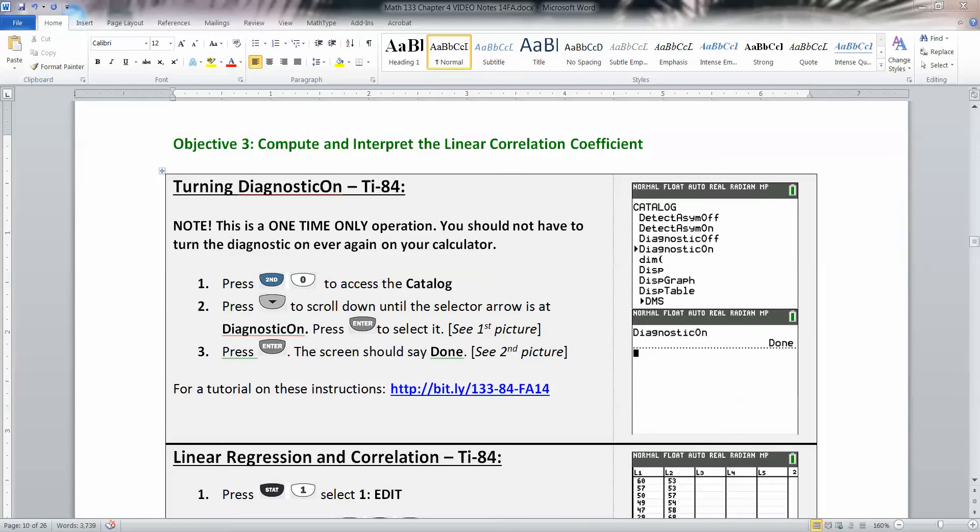Now that we know how important the correlation coefficient is, it's important that we can calculate it ourselves from a data set rather than just gauging it from a scatter plot.